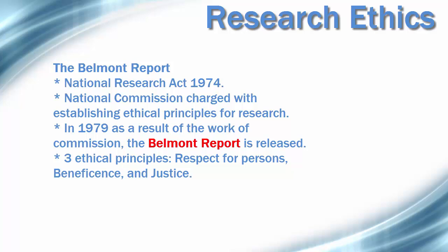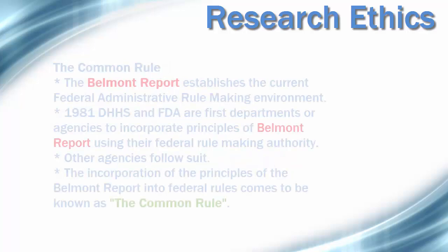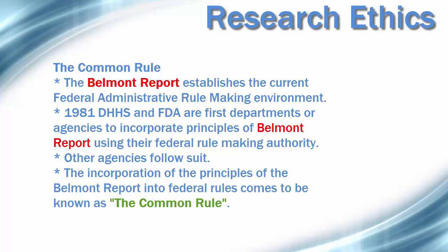The second principle, benefits, is that human subjects should not be harmed, and research should maximize possible benefits and minimize possible harms. The nature and scope of risks and benefits must be assessed in a systematic manner. The third principle, justice, is that the benefits and risks of the research must be distributed fairly. For the selection of subjects, there must be fair procedures and outcomes in the selection of research subjects.